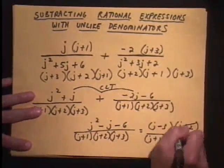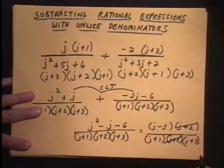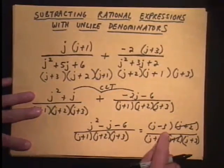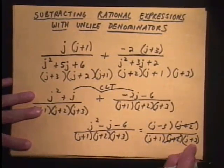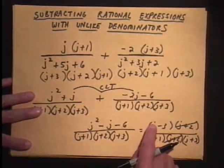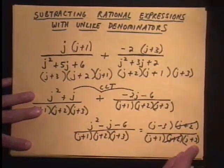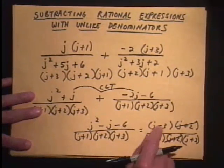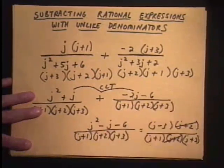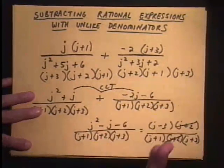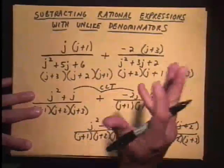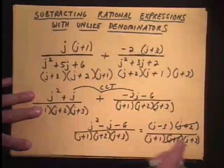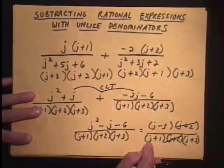Now notice we've got the j plus 2 over the j plus 2. Anything divided by itself reduces to 1, and we've got the chop going there. We can chop those j plus 2s out. That's the final answer: j minus 3 all over (j plus 1)(j plus 3). Now, why can't you chop the j minus 3 and the j plus 3? They are not opposites, and they are not the same creature. Hands off. If you try to chop these, you'll hurt your hand. Your grade will be like that if you try to chop where you don't have to chop.